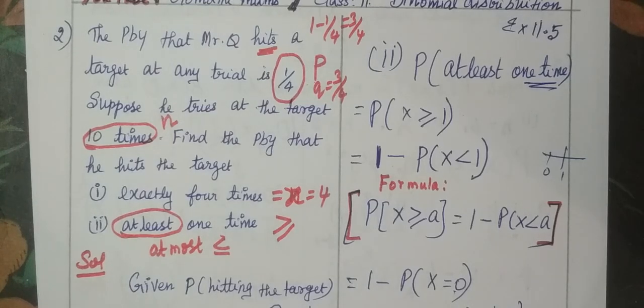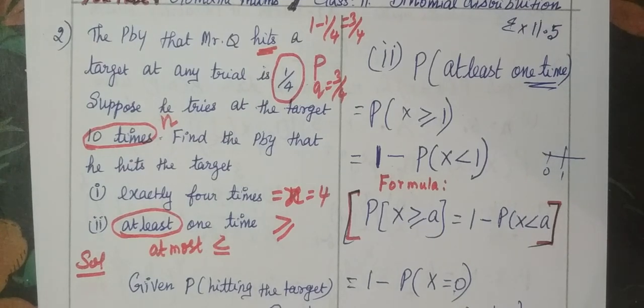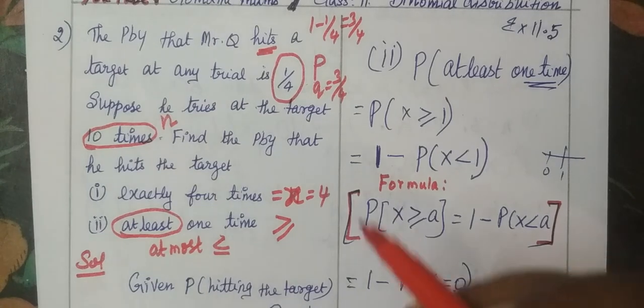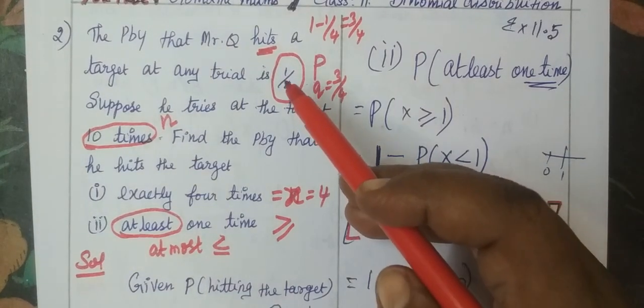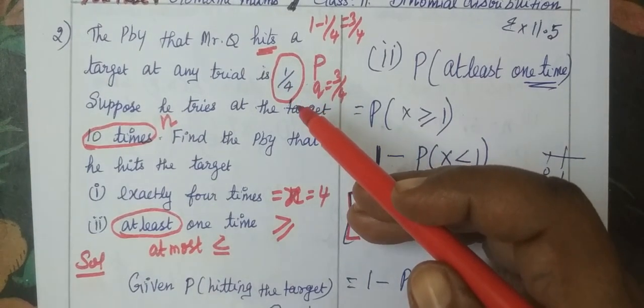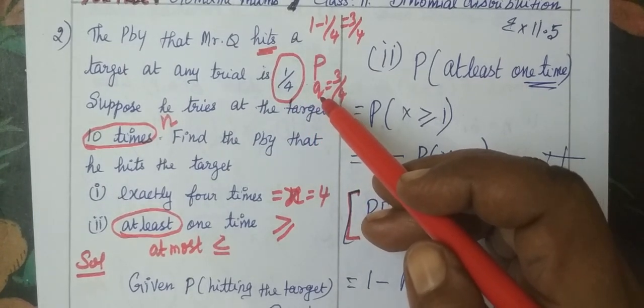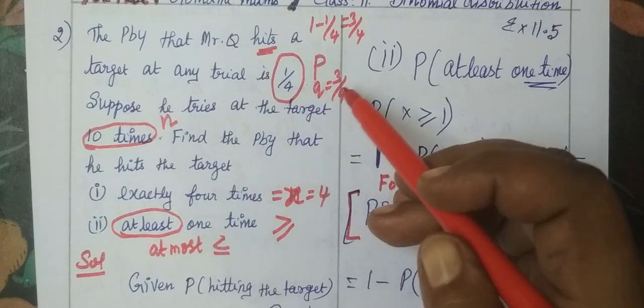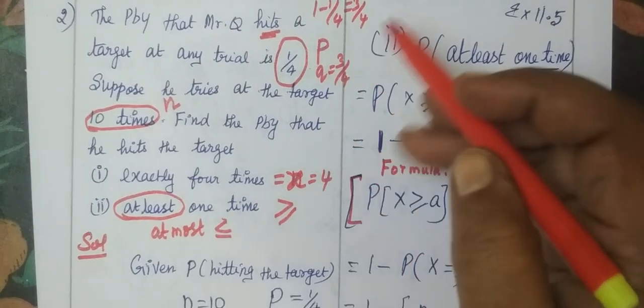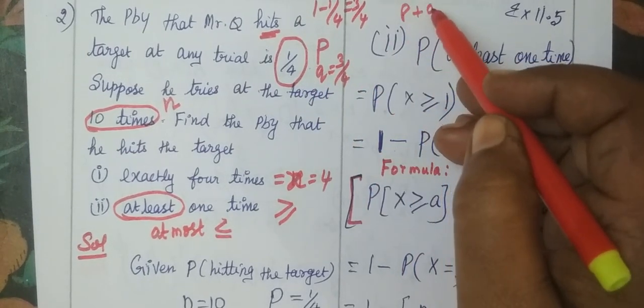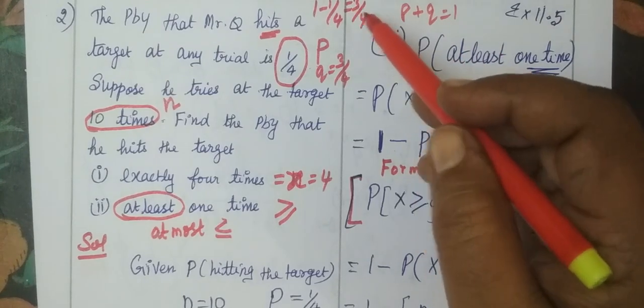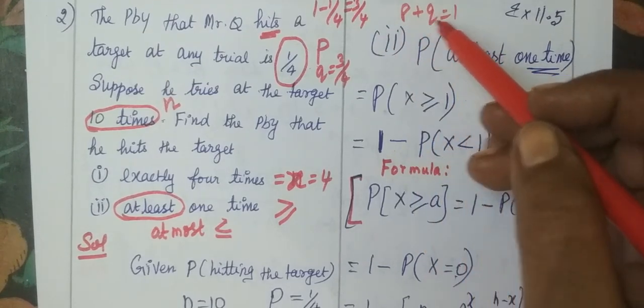So, welcome. This is for class 11 binomial distribution. Let the probability that Mr. Q hits the target. The probability given is P = 1/4. The probability of failure, Q, is equal to 1 minus 1/4, which is 3/4, because we know P plus Q is equal to 1.